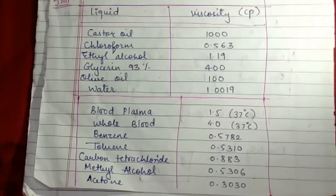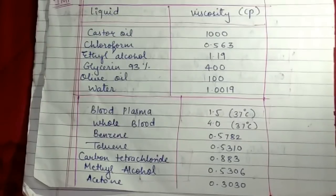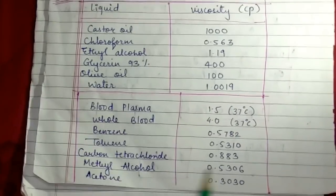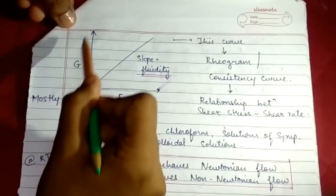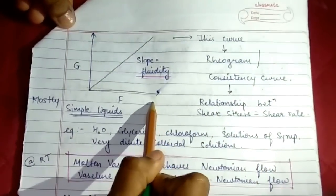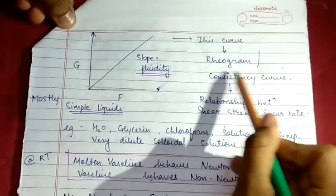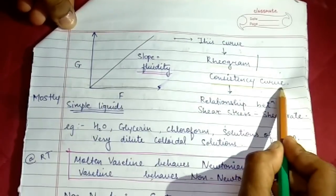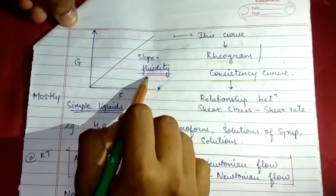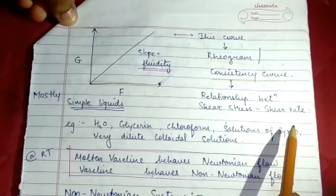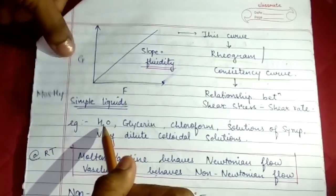This table is important from GPAT point of view. These are various liquids with their viscosity. These curves represent rate of shear versus shearing stress. This curve is known as rheogram or consistency curve, and the slope of this curve is called fluidity. Relationship between shear stress and shear rate is determined by this curve.